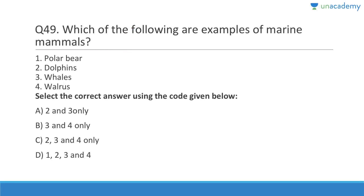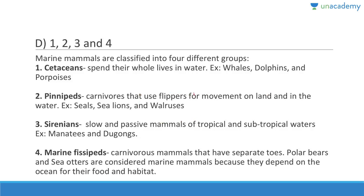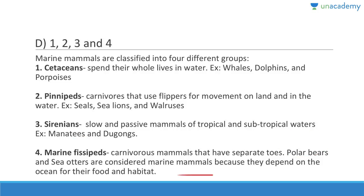Question forty-nine: Which of the following are examples of marine mammals — polar bear, dolphins, whales, walrus? Answer is D, all four. Cetaceans spend their whole lives in water and include whales, dolphins, and porpoises. Pinnipeds use flippers for movement on land and include seals, sea lions, and walruses. Sirenians include dugongs and manatees. Polar bears and sea otters are considered marine mammals because they depend on the ocean for food and habitat.